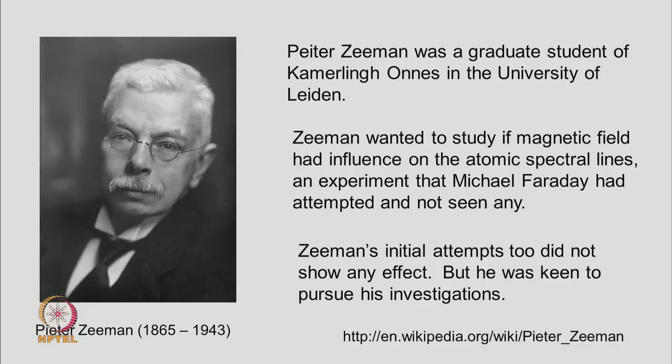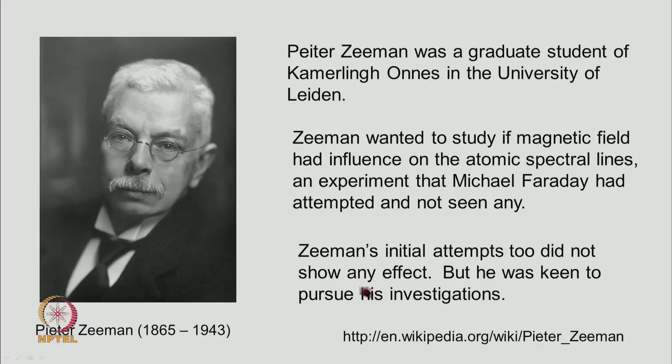Now, Zeeman wanted to study if magnetic field had an influence on the atomic spectral lines. In those days, it was already known that atomic spectra come in the form of discrete lines. So, he wanted to study if magnetic field could show any effect on them. As a matter of fact, Michael Faraday did try to investigate this, but he could not see any effect and Zeeman's initial attempts also did not show any effect, but he was very keen to pursue his investigations.